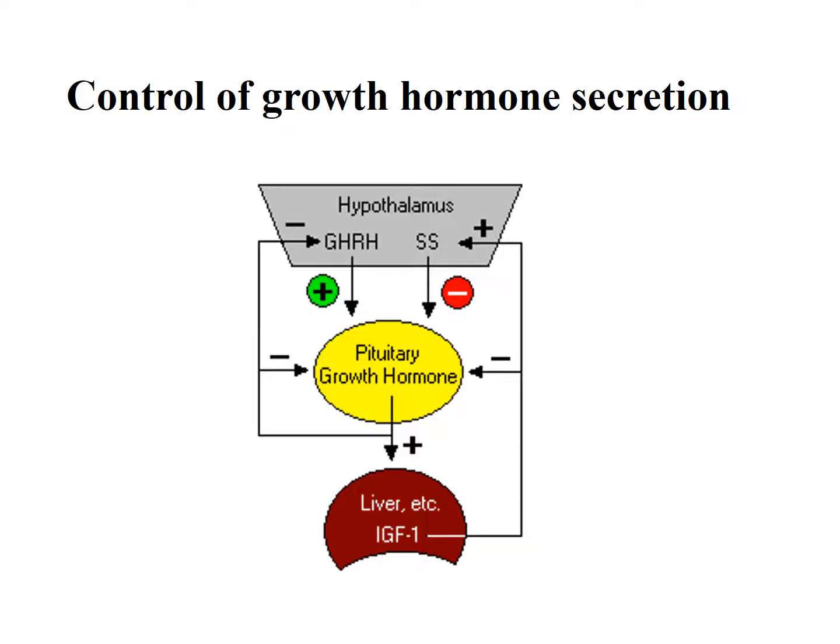The main target for growth hormone action is the liver. In the liver, growth hormone stimulates the synthesis of a compound called Insulin-like Growth Factor-1 (IGF-1), also called somatomedin. This insulin-like growth factor-1 brings about most of the effects of growth hormone on bone and cartilage.